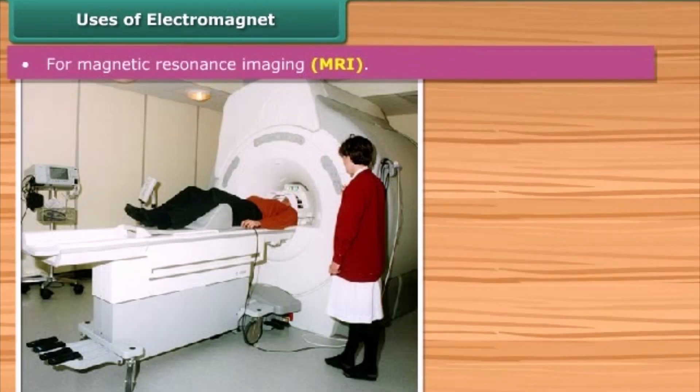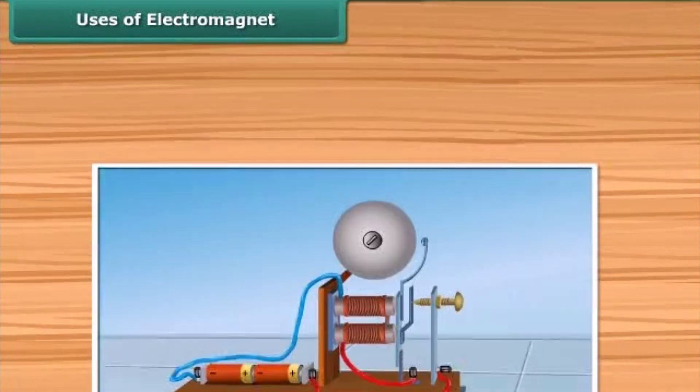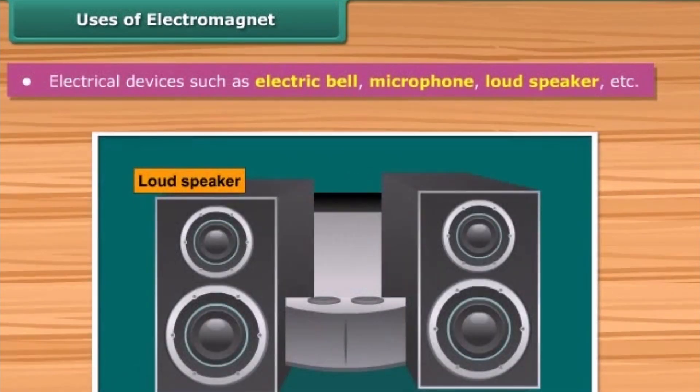Electromagnets are also used for magnetic resonance imaging, getting a detailed image of the inside of the body to diagnose a number of diseases. A variety of electrical devices such as electric bell, microphone, loudspeaker, etc. make use of electromagnet.